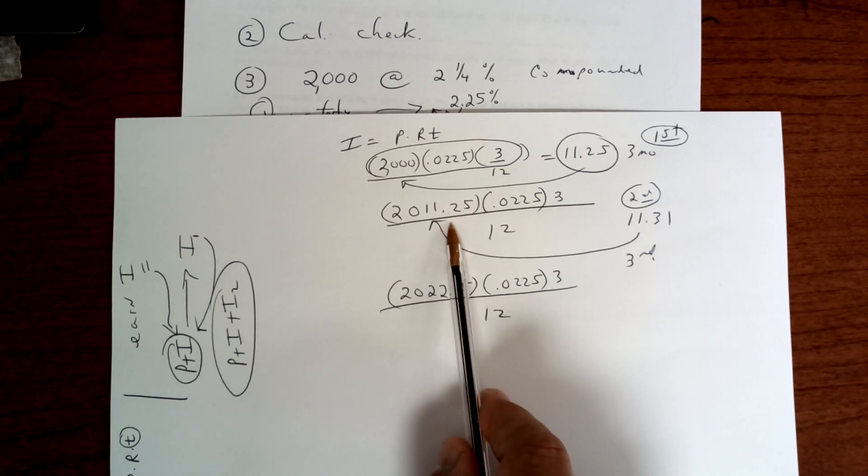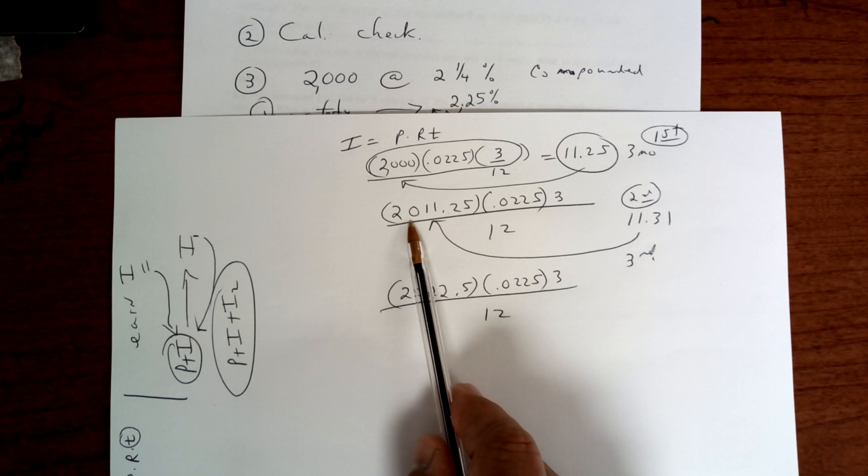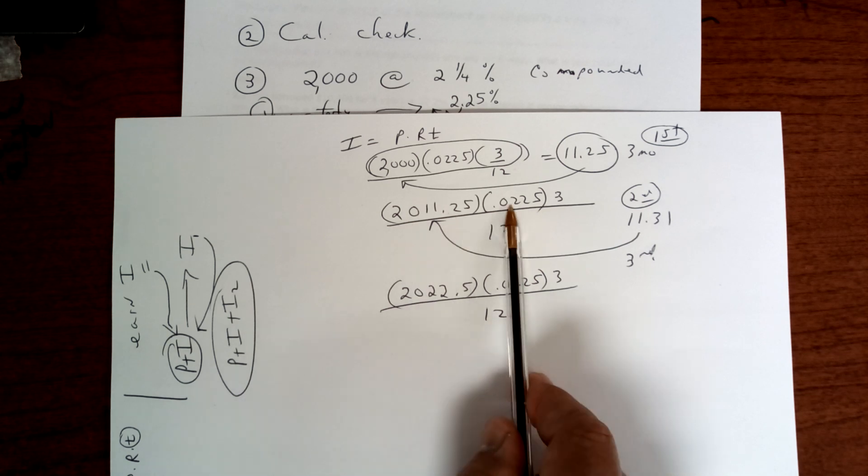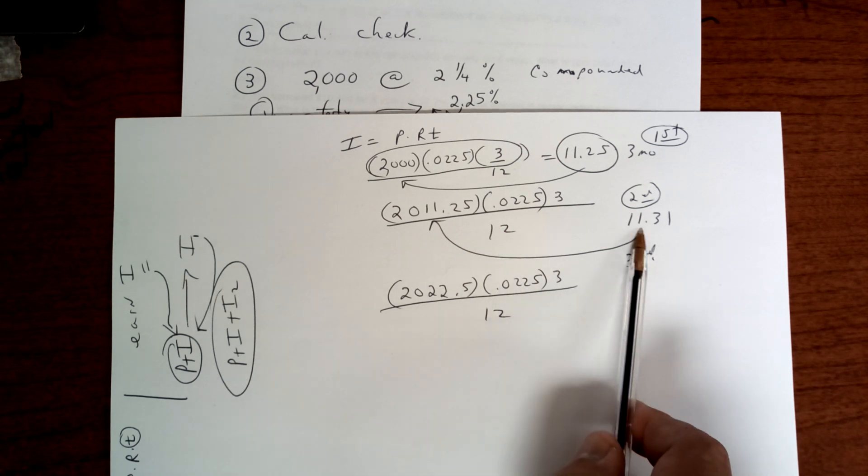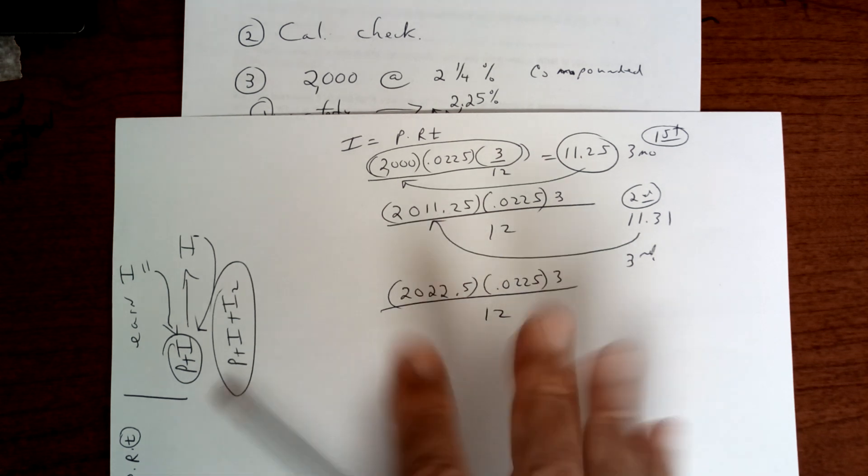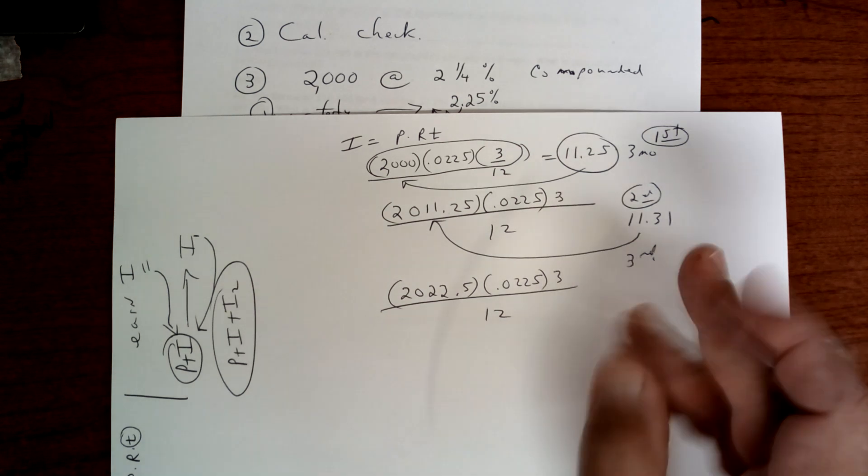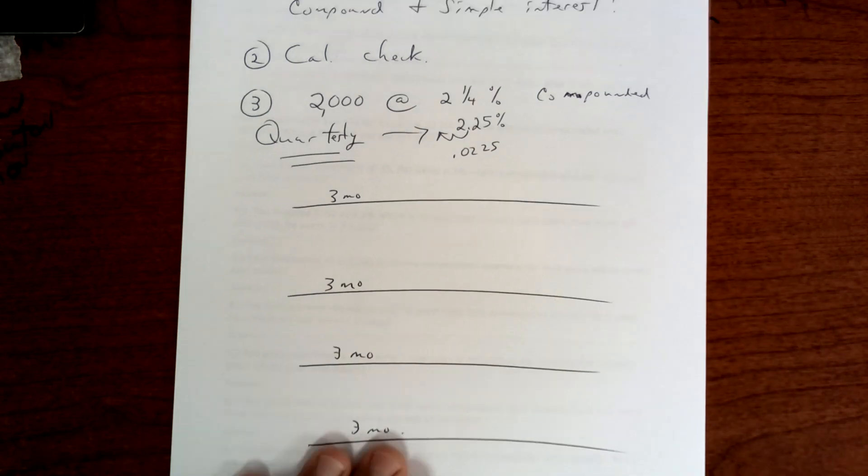You compute the interest, that gives you the first three months. You add it back to the principal. You take your new amount, which is the money you invested plus the money you earned, times the rate times the time divided by 12. And you get a new interest for the second three months, and you add it back to the principal.